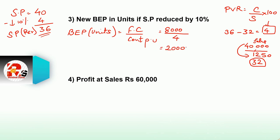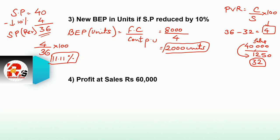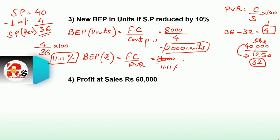New BEP in units: formula is fixed cost divided by contribution per unit. Fixed cost is 8,000, new contribution per unit is 4, so BEP units equals 8,000 divided by 4 equals 2,000 units. Revised PVR equals contribution per unit divided by revised selling price into 100, that is 4 divided by 36 into 100, which gives 11.11% (a recurring figure). BEP in rupees equals fixed cost divided by PVR equals 8,000 divided by 11.11% equals 72,000.